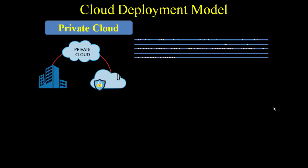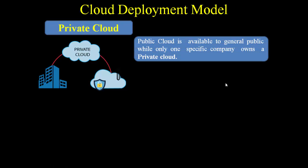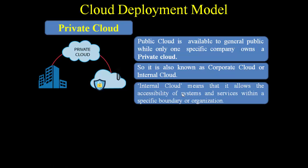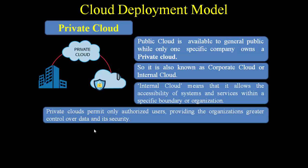Next is private cloud. As the name suggests, it is not for the general public. Only one specific company owns a private cloud, so it is also known as a corporate cloud or internal cloud. Internal cloud means it allows accessibility of systems and services within a specific boundary or organization. Outside the organization, nobody can access its services. It permits only authorized users, giving the organization greater control over data and security.